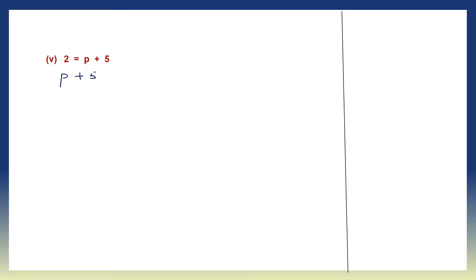Next question: 2 is equal to p plus 5. I'm writing what is on the right hand side on the left to make my work easier: p plus 5 equals 2. To find the value of p, plus 5 goes to the other side and becomes minus 5. So we have plus 2 and minus 5. When signs are different, put the sign of the bigger number and subtract: 5 minus 2 is 3, so p is equal to minus 3.